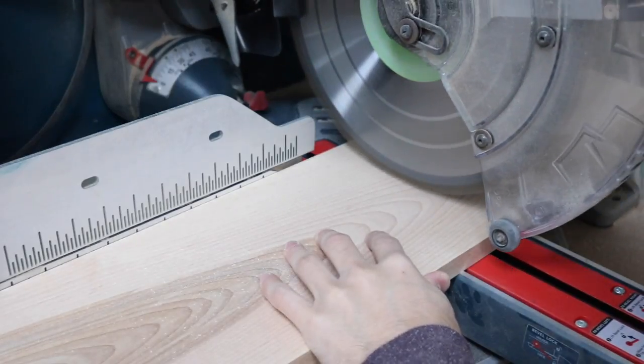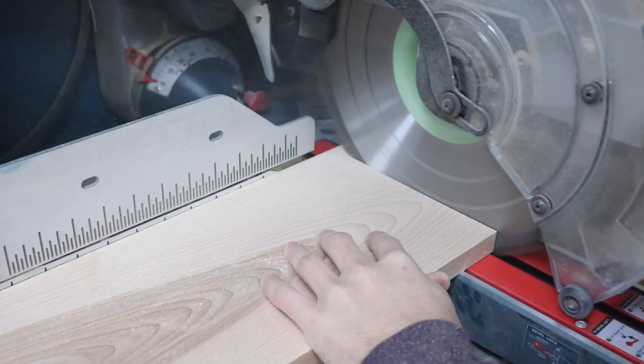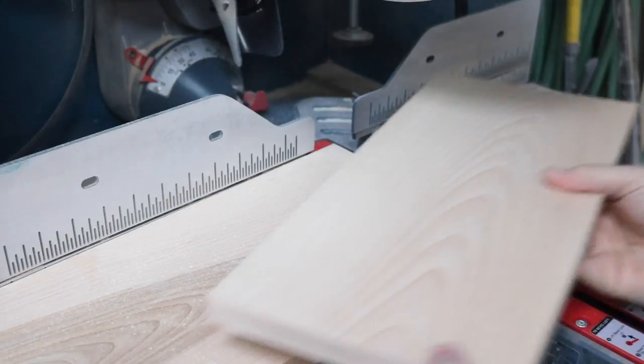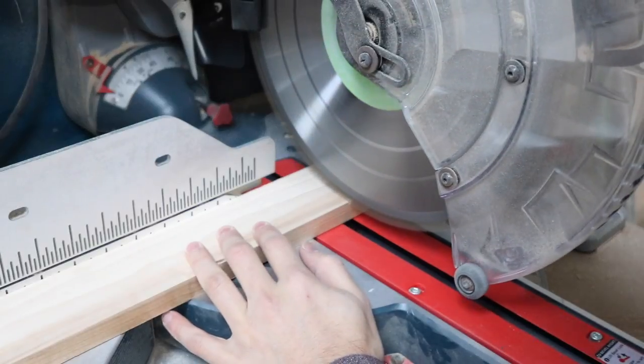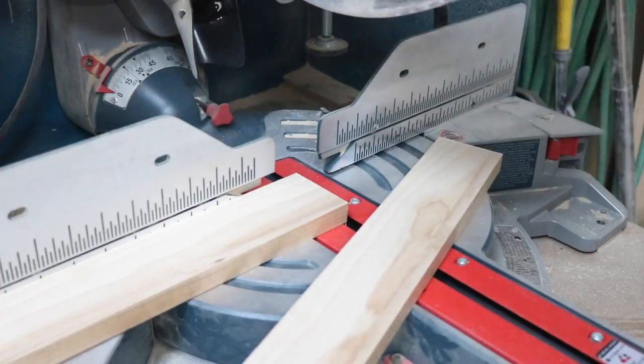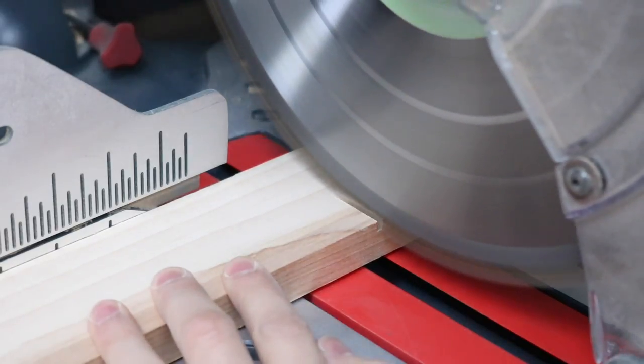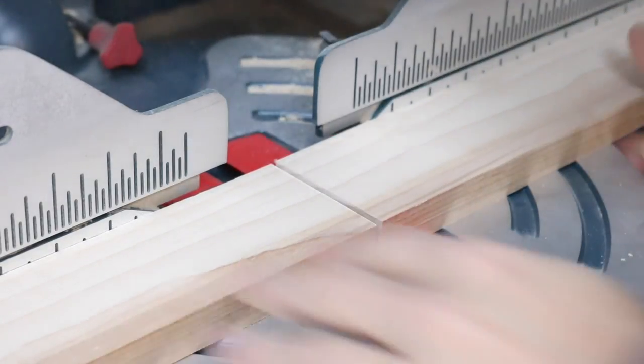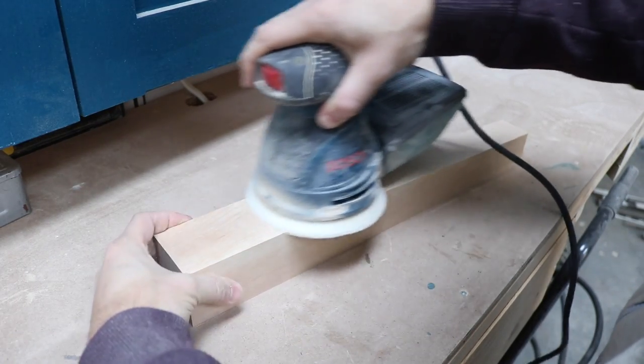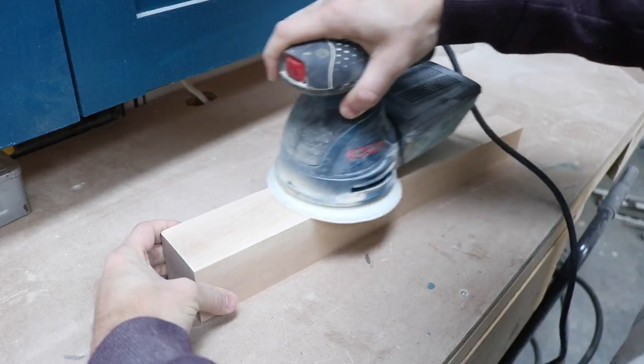Once the front and back legs were cut, I used a 1x8 to cut the backrest, and I used 1x3s for the rails. Once all the pieces were cut, I sanded everything with 80 grit and 120 grit to remove the saw marks.